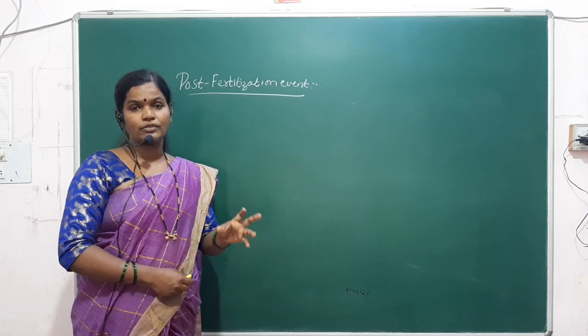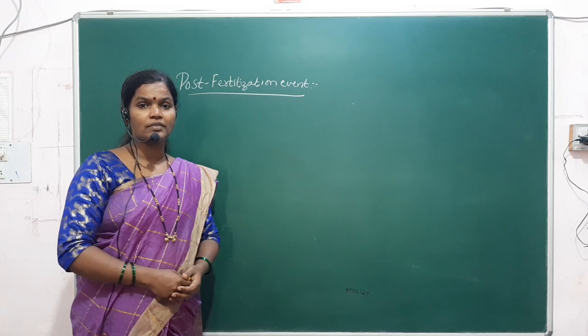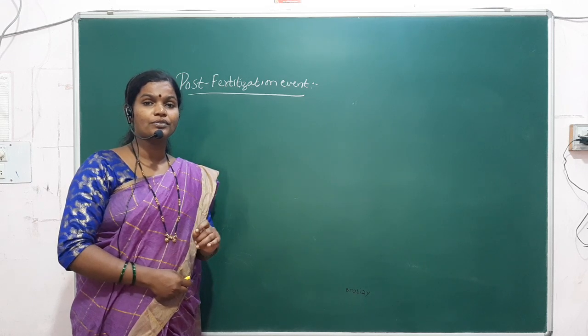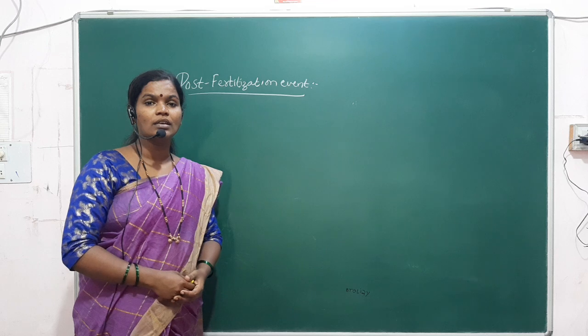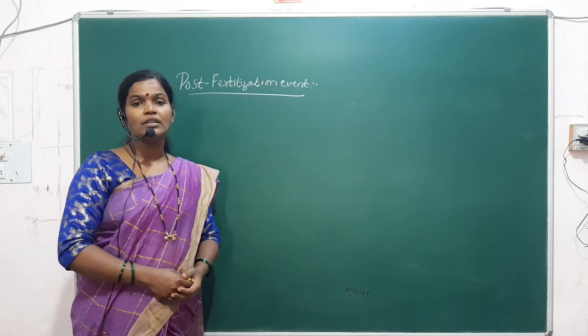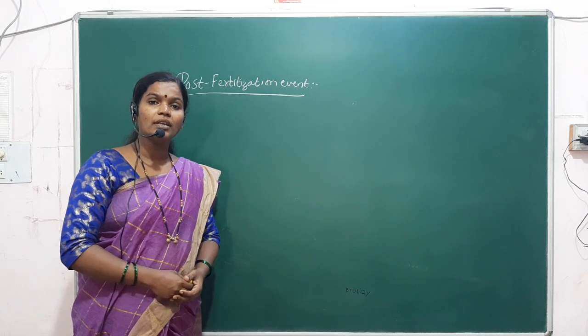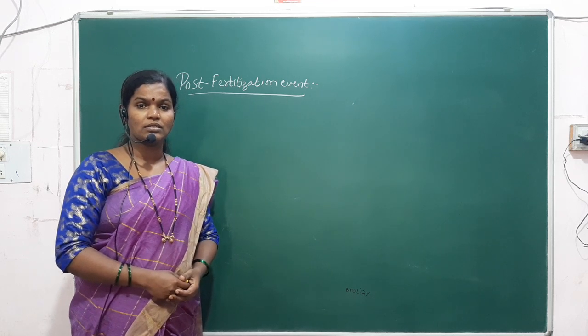That triploid condition — 3N number of chromosomes — is going to produce the endosperm. The triploid condition is going to form the PEN.